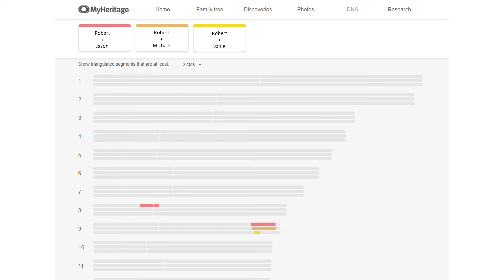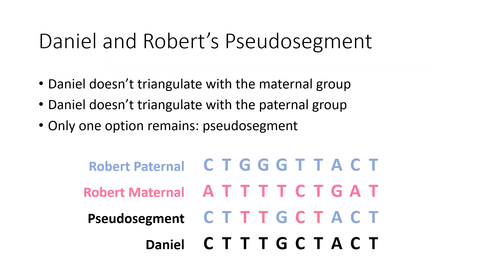So if the segment with Daniel is not maternal and it's not paternal, there's only one other option: it likely has to be a false segment or a pseudo segment. Robert's paternal segment might have a code like CT, GG, TT, ACT, while the maternal segment has ATT, T, CT, GAT. Weaving back and forth would create a pseudo segment with some nucleotides from the paternal and some from the maternal — and that matches Daniel's segment there, creating a false match between Robert and Daniel.